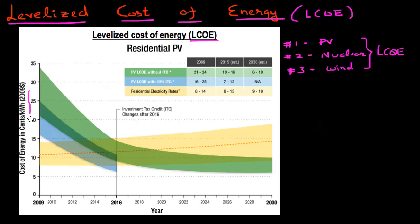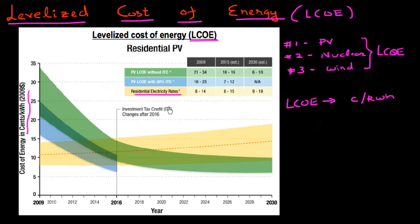The LCOE is reported in units we can relate to — the same units used for our electricity bill, which is cents per kilowatt hour. For comparison, if you live in the Bay Area and have PG&E supplying your electricity, the residential rate is typically around 11 cents per kilowatt hour.